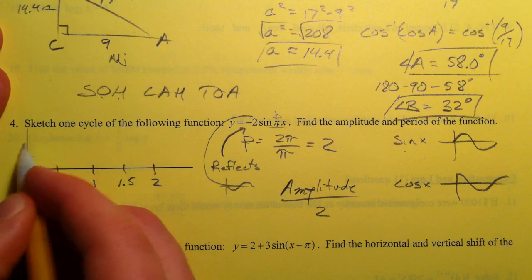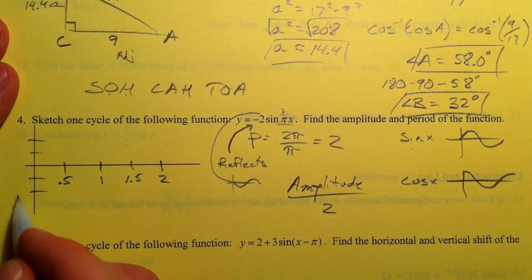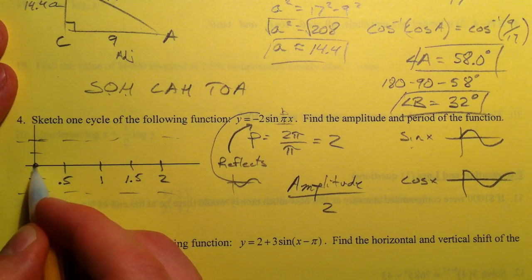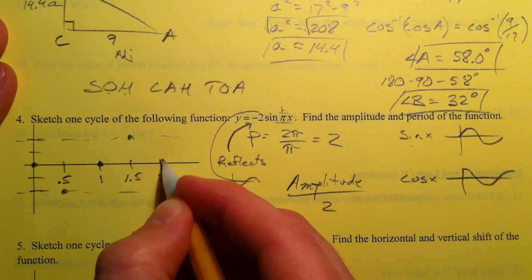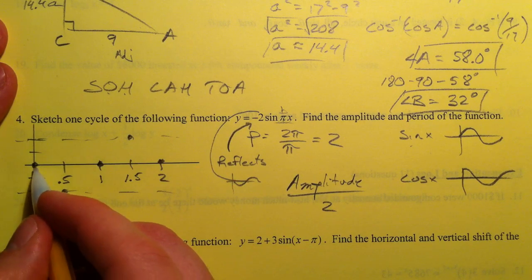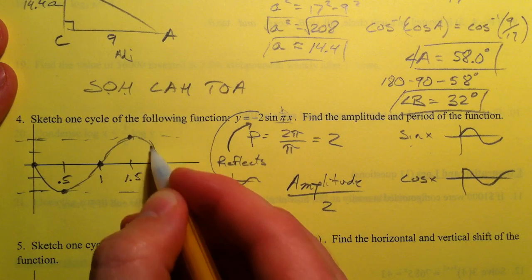And the 2 is our amplitude. And so we're going to go up to 2 and down to 2. Amplitude is that distance from the equilibrium line. And so we're going to go from here because it's a sine. And it's going to go to the valley, back to the middle, to the peak, to the middle. And that will be one cycle of our graph. It's going to repeat after that.